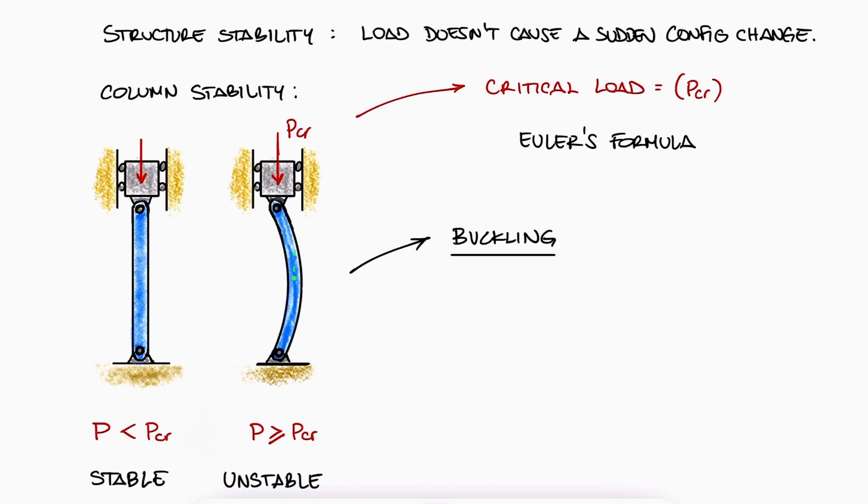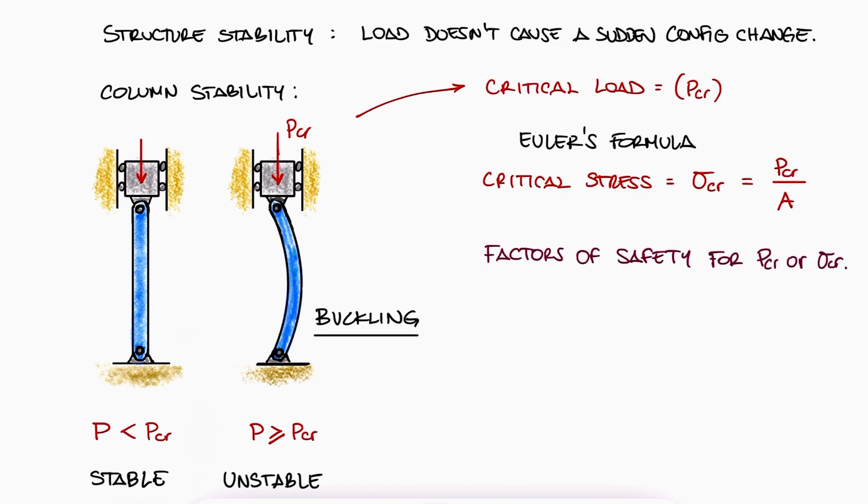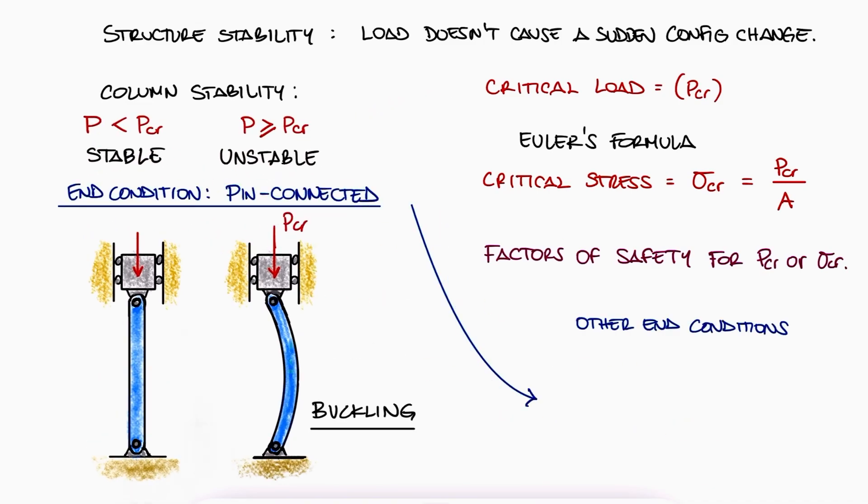Besides the critical load, a critical normal stress can also be defined using Euler's formula. Factors of safety are defined either for the load or the stress. From the pin-ended equation, we can extrapolate the expression for different end conditions, and we use the effective length of a column for those calculations.